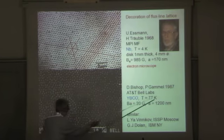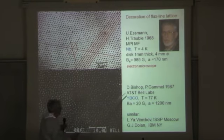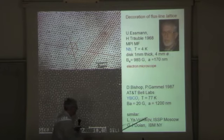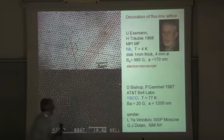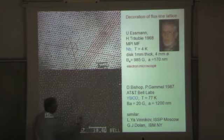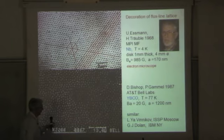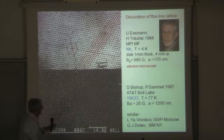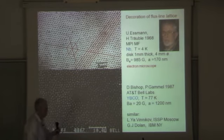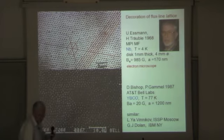Twenty years later, in 1987, several groups in the world—at IBM, Bell Labs, and in Moscow at the Institute of Solid-State Physics—did decoration experiments in these new high-temperature superconductors like yttrium barium copper oxide, and they also observed the vortex lattice. But now, you should see the scale is different. Here this is one micrometer, here it's 10 micrometers, and the magnetic field is now 20 gauss. Here it was about 1 kilogauss. So the resolution required was much weaker and could be observed in the optical microscope. Also, the lattice is no longer regular—it's almost amorphous, very irregular.